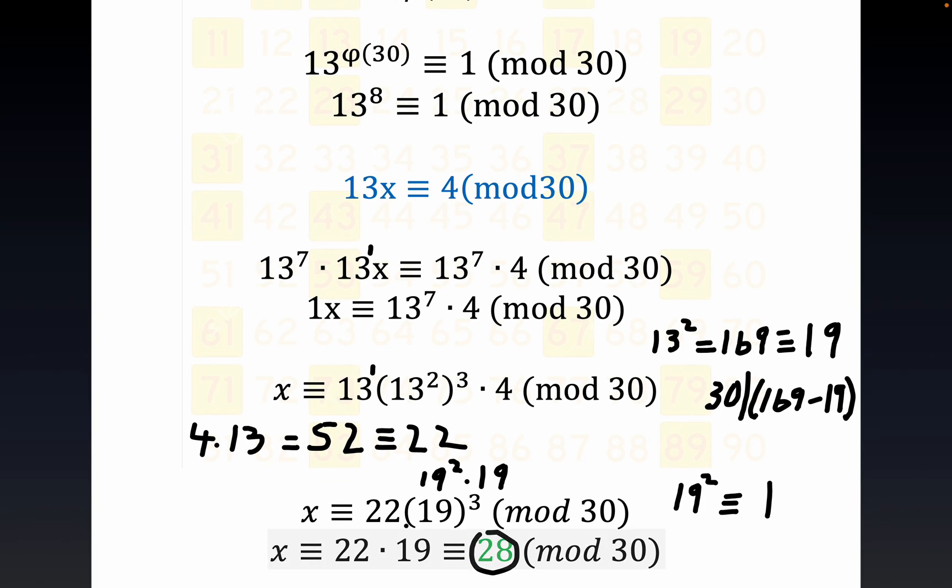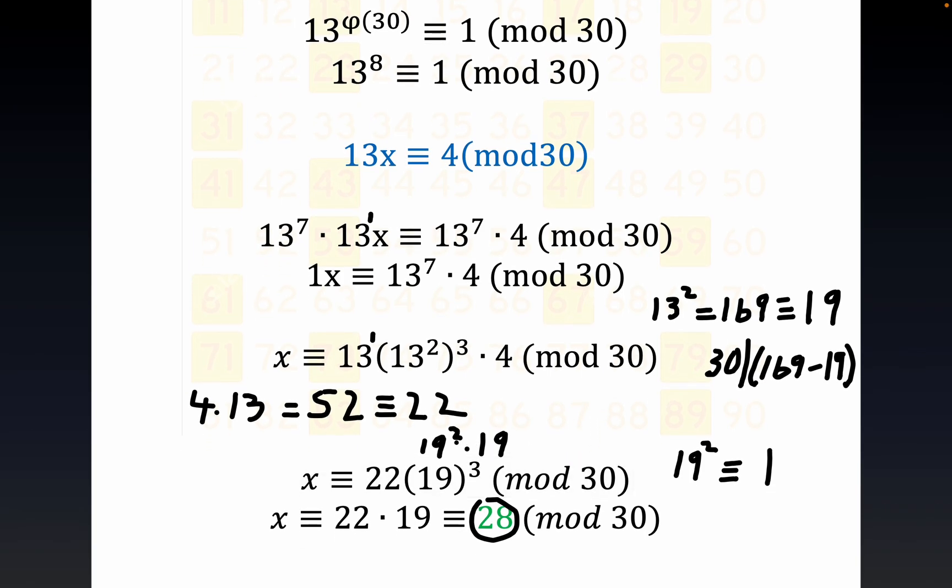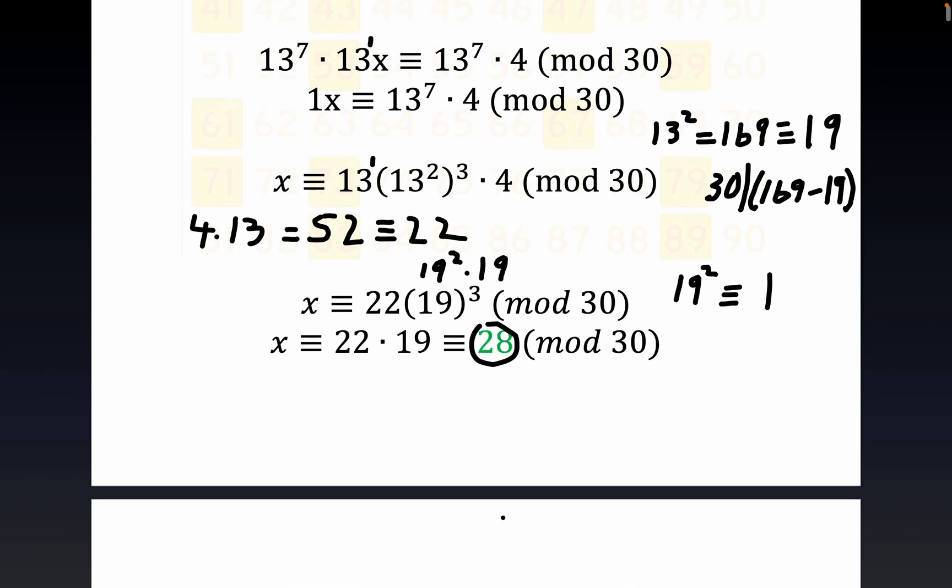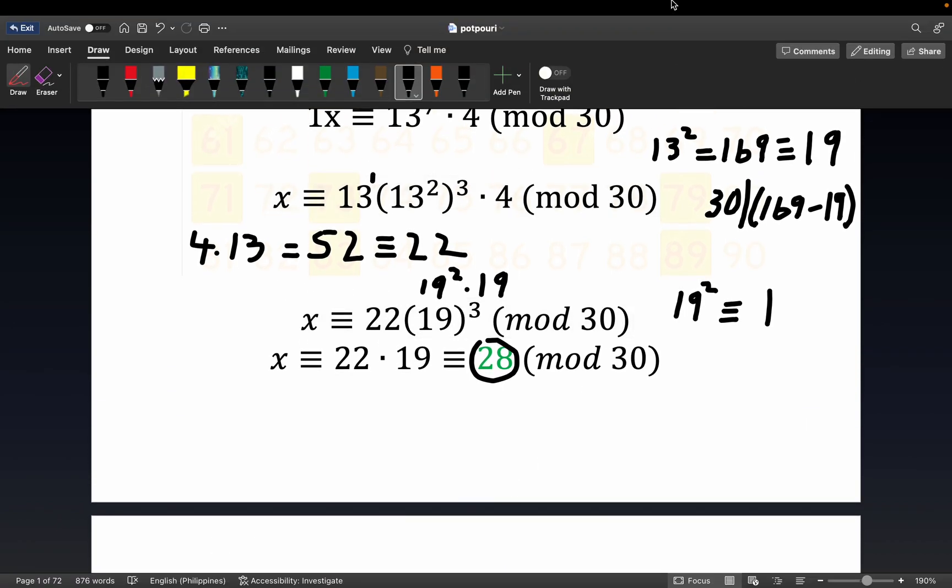Now the rest of it is just doing congruence reduction however you can. I'm not claiming my way is the best way, but I notice that if we can get 13 squared as a manageable number, at least we reduce it to 19 because 30 divides 150. So at least we're working with a relatively small number, and then we catch another break when we note that 19 squared is congruent to 1 because it's 361 minus 1 is 360, and 30 divides 360. The rest of it is very straightforward arithmetic. I didn't do this multiplication for you, but it's very easy to verify that when you multiply 22 by 19 divided by 30, you get 28. So that is the final answer, and I hope you got some value out of it.